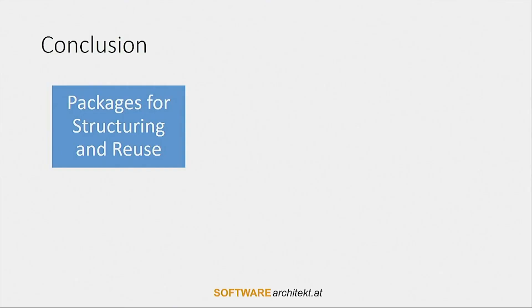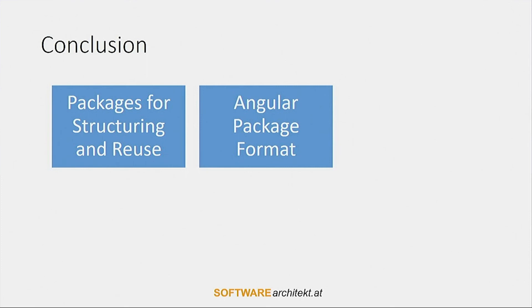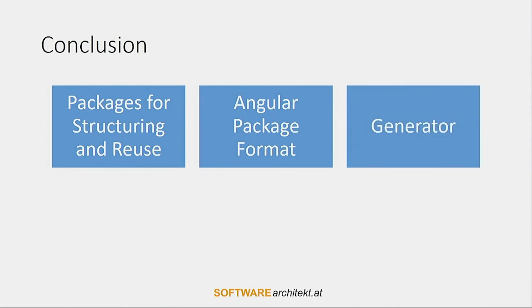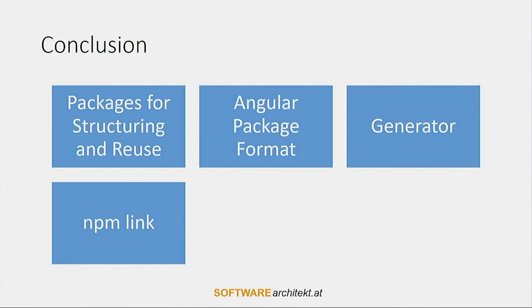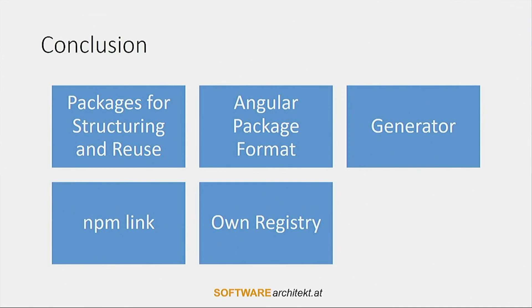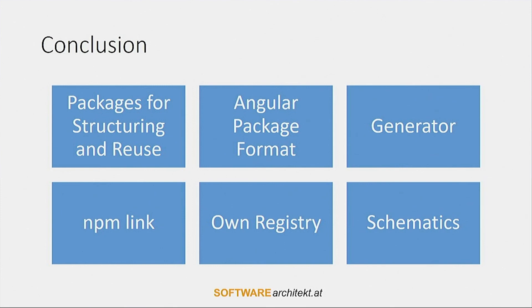Let me come to a conclusion. We have seen that packages are a good thing for structuring a big application as well as for reusing code. We've seen the Angular package format from the Angular team that we should align with so packages work seamlessly with Angular and all optimization techniques. We've seen generators to help get started with Angular libraries, symbolic links for local testing, and that it's a good idea to use an internal registry to share code. At the end, I gave a sneak peek to Schematics, which allows you to write your own code generators using the Angular tooling you already have. Thanks for coming — here is my contact data, feel free to reach out with questions, and you'll find all my material after this session at my blog.